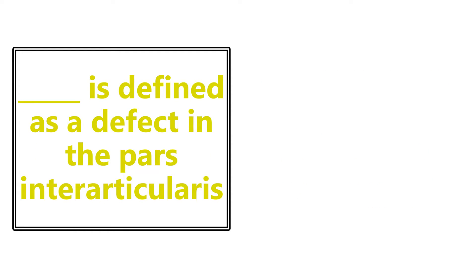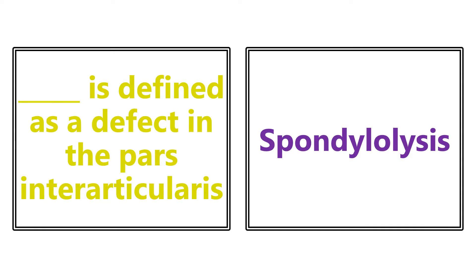Spondylolysis is defined as a defect in the pars interarticularis. Make sure you distinguish it from spondylolisthesis — these different terms can be easy to mix up, so make sure you have that down.